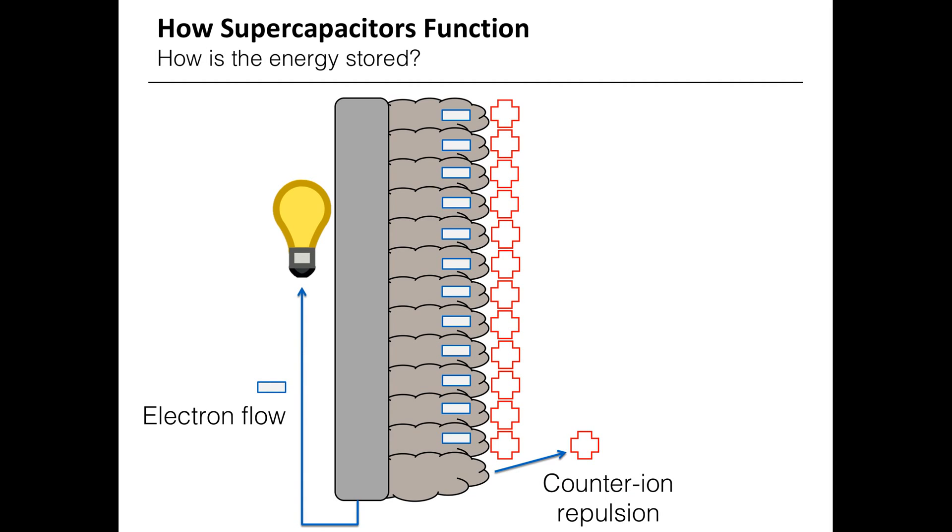Now, if we were to discharge our cell by removing electrons through the external circuit, at the electrode-electrolyte interface we would have an excess of positive ions.